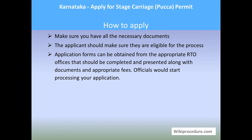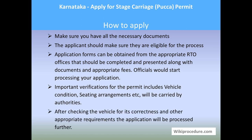The applicant should make sure they are eligible for this procedure. Application forms can also be obtained from the appropriate RTO office on your visit. Collect the form, fill in the details, attach all the documents, and submit the bundle to an officer at the RTO office. The officer will indicate the amount to be paid at the counter. Go to the counter on your turn, pay the fees, and submit the documents. After acceptance, important verification — including the vehicle condition, seating arrangement, and other required details — will be inspected by the authorities. After checking the vehicle for correctness and other requirements, the application will be processed further to issue the stage carriage PAKA permit.